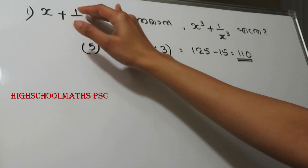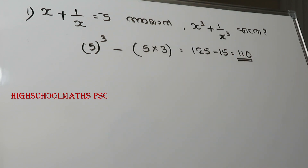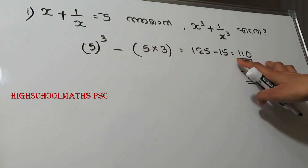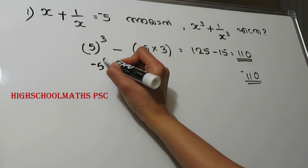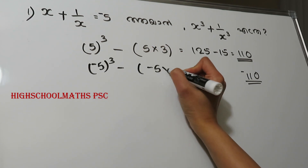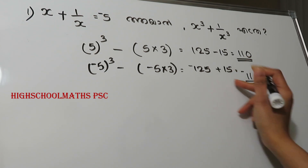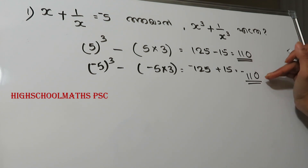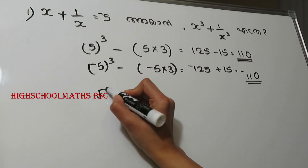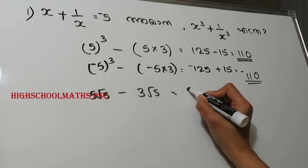Now let's discuss this earlier. x plus 1 by x is equal to 5. Then we chose 5-cubed minus 5 into 3, giving 110. If you change it, if you have 110, it is simple to say it is minus 110. If we have a positive 5, the answer is minus. What is minus 5 cube? It is minus 5 cube. Here, minus 5 into 3 — if you have a change, it is plus. It is minus 15. If you have a change, it is minus 5, then minus 5. In this case, we have a root 5 cube — that is 5 root 5 minus. If you have root 5 into 3, it is 3 root 5. If we say root 5 of 2, it is minus 5.